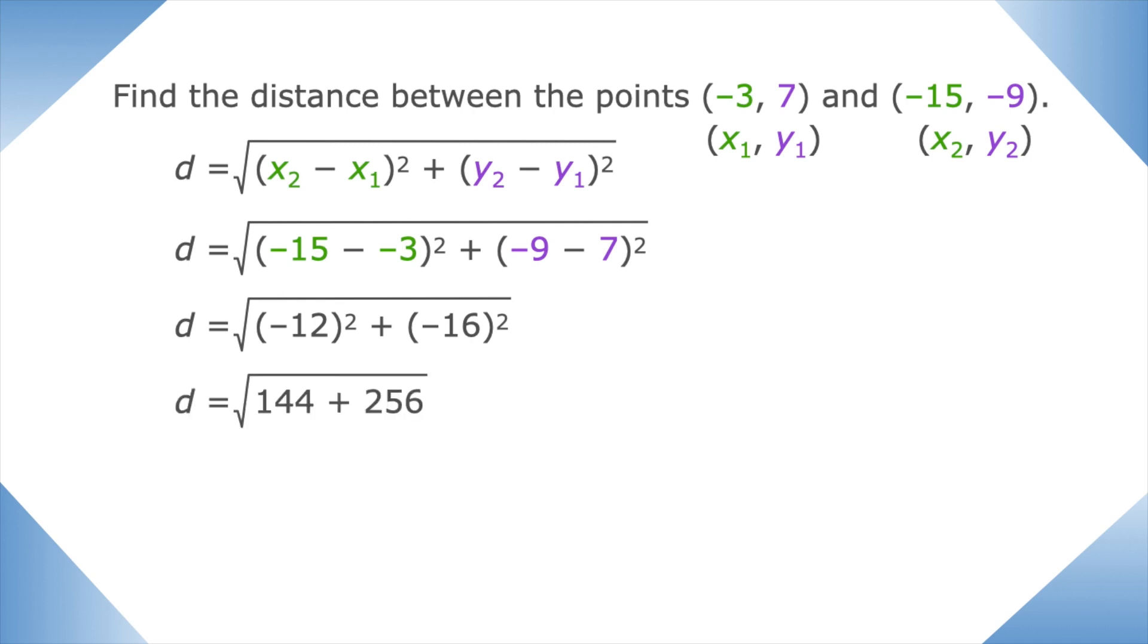Negative 12 squared is 144, and negative 16 squared is 256. 144 plus 256 is 400. And the square root of 400 is 20.